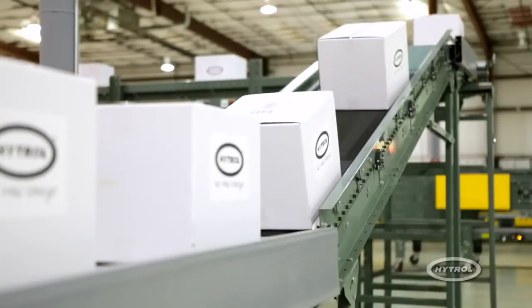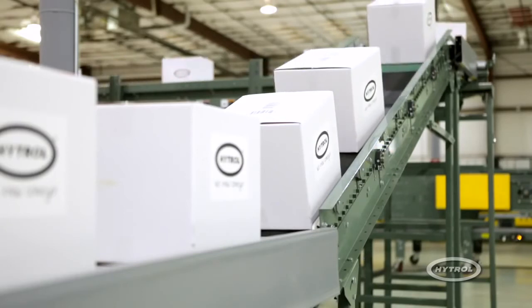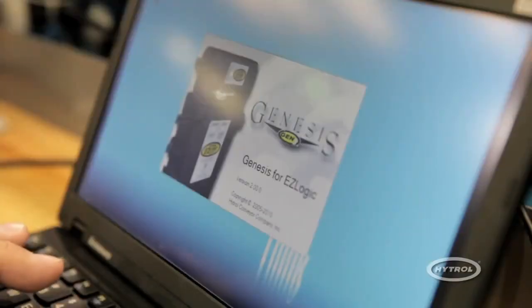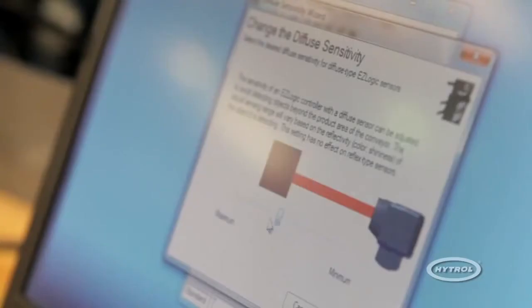EasyLogic comes pre-programmed with the most common settings for your particular model. Hytrol's Gen 3 configuration software allows you to easily configure each zone controller to meet the needs of your system.